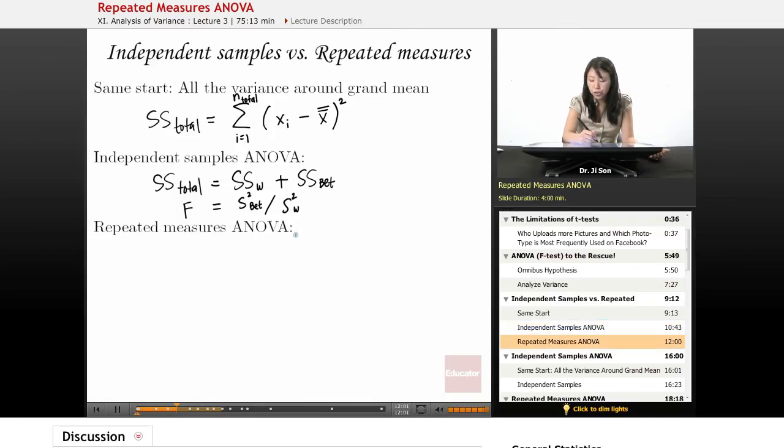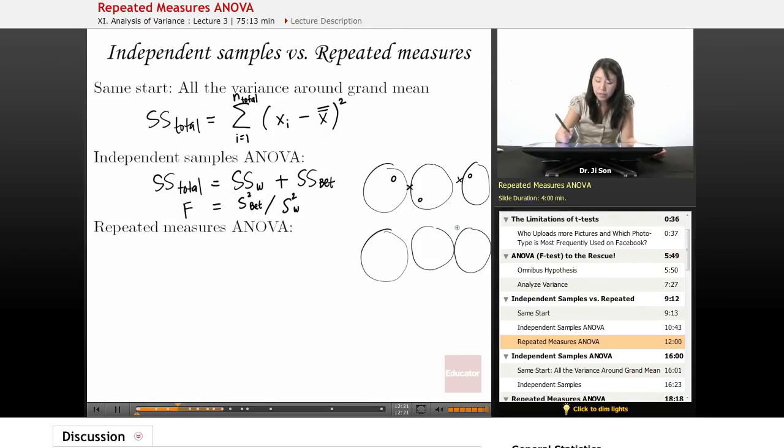Now in a repeated measures ANOVA, we're going to be talking about something slightly different, because now we have these linked examples, linked data. So here, the data is independent. These samples are independent. They're not linked to each other in any way. But here, these samples are actually linked to each other, either by virtue of being made from the same subject, or the same class produced it, or something about these scores. They're linked to each other.